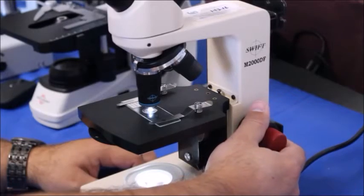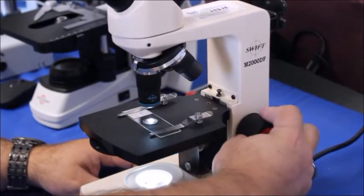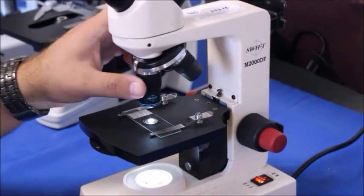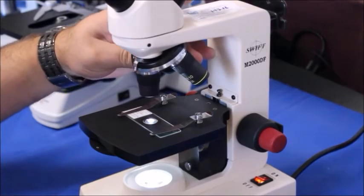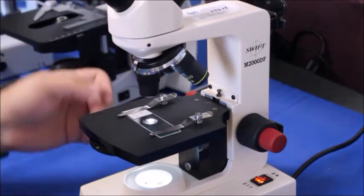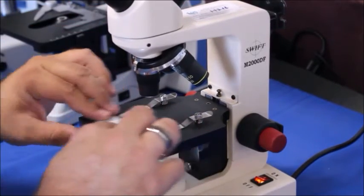Once you're done, you want to take the stage all the way back down by using the coarse focus again. We're going to return it to what we call first position, move it back to the 4x objective, because again it's farthest away, it's out of the way, so that way you can remove your slide.